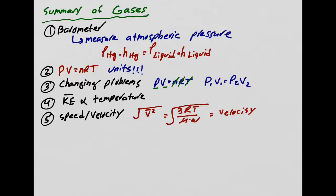The formula is sqrt(3RT / molecular weight), and don't forget the units. Note that R here is a different R — it's 8.314 — and you must pay attention to units. Conceptually, when the molecular weight goes up, the velocity comes down. A heavier atom cannot run around as fast; a lighter atom runs around faster.